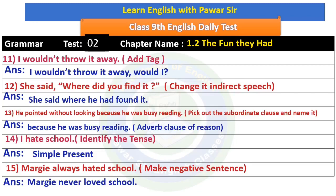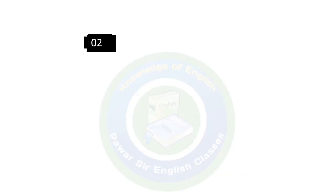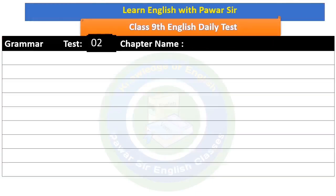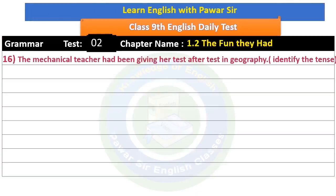It means she never had affection for school — she always had dislike for it. Next question: 'The mechanical teacher had been giving her test after test in geography.' Identify the tense. Look at the verb after the subject — 'had been giving' — it is past perfect continuous tense.